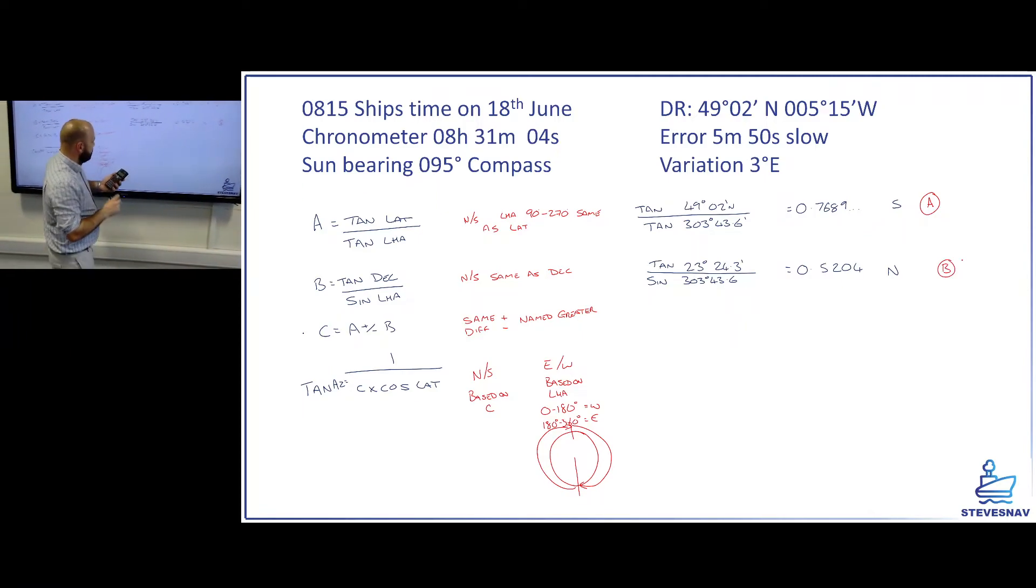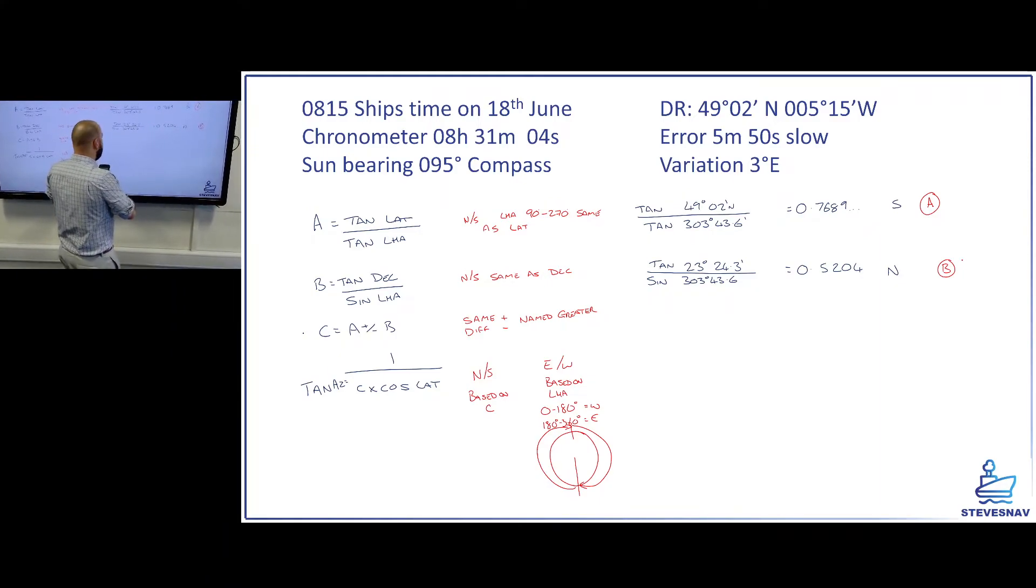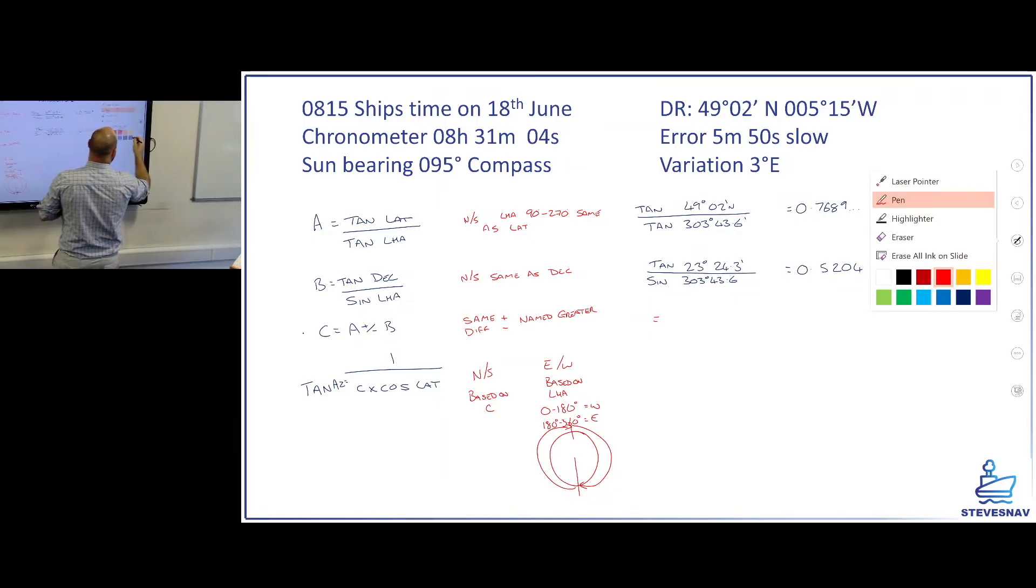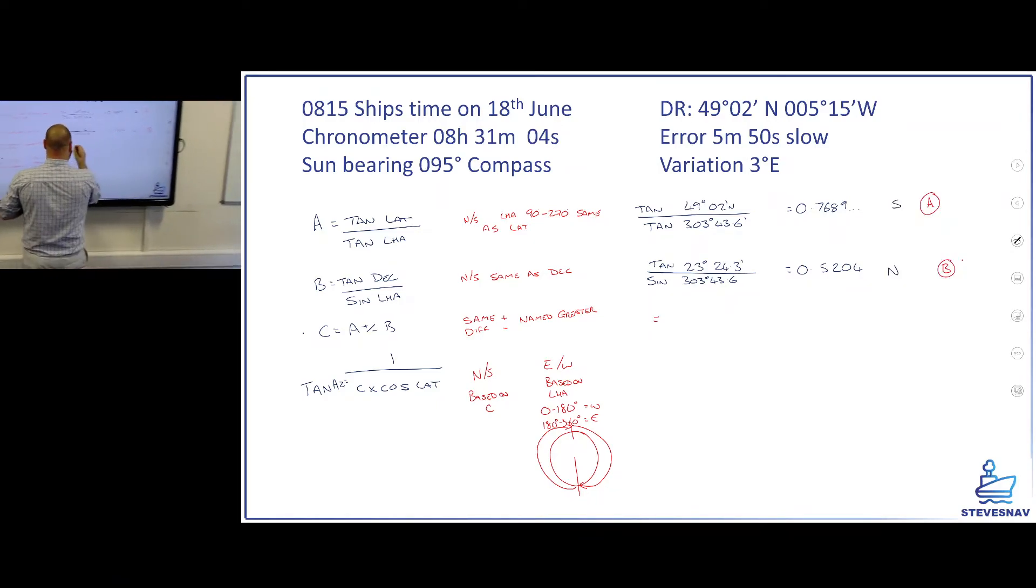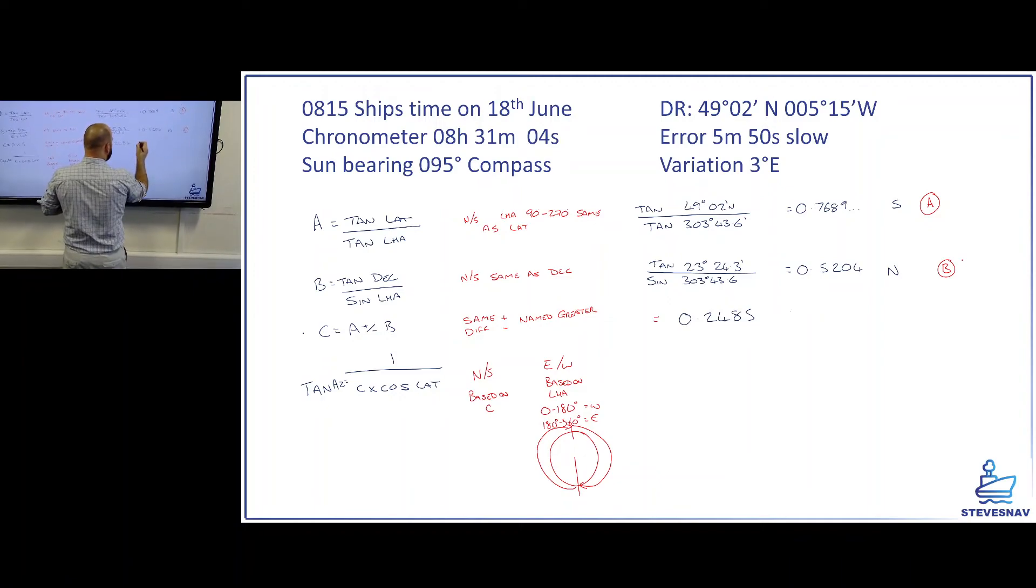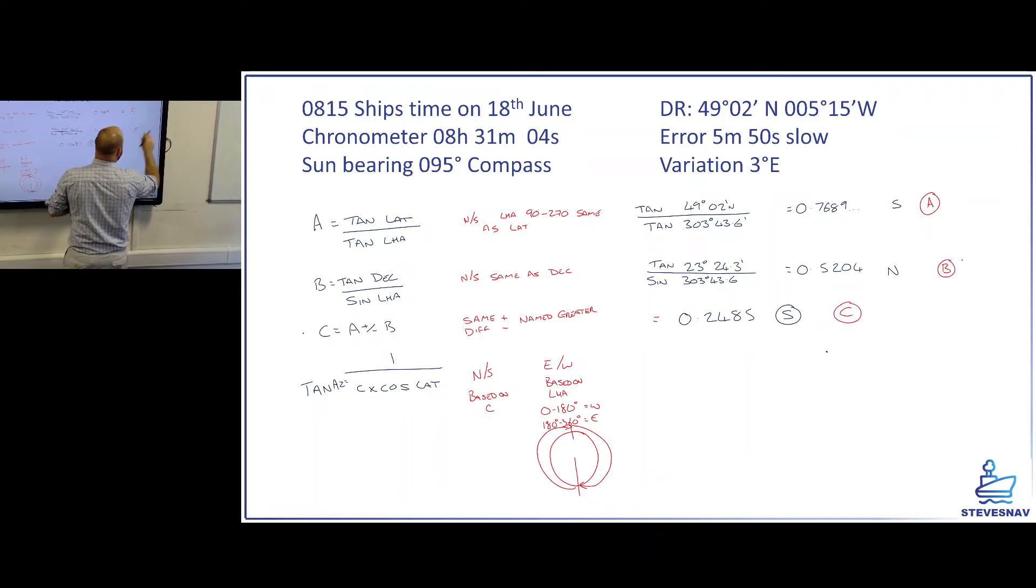Now C, I'm just going to do A plus or minus B. So we've got recall A minus recall B equals. C is going to be 0.2485 and south is greater, so it's going to be south. And I'm going to save that as C in my calculator memories.